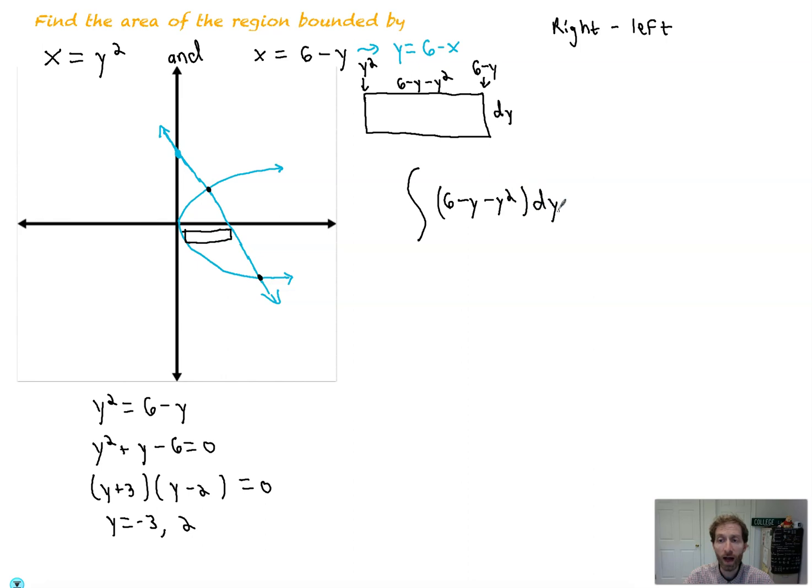Oh, yes. dy integrated from the bottom value stacked up to the top. So you're taking rectangles and you're stacking them up. And that's going to be from negative 3 to 2.